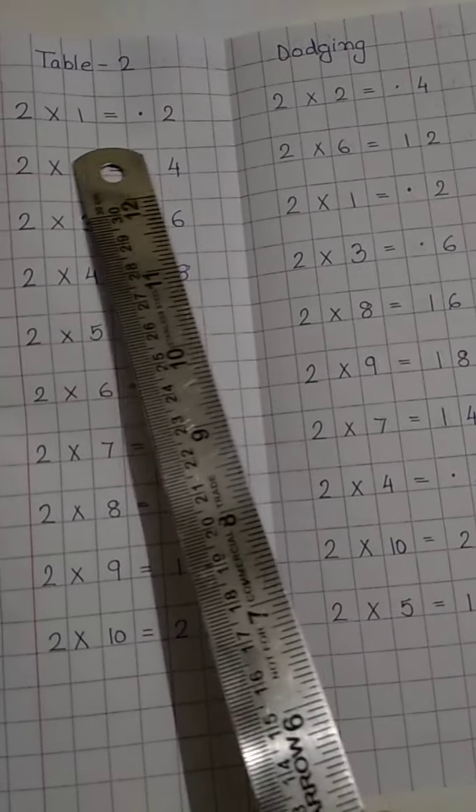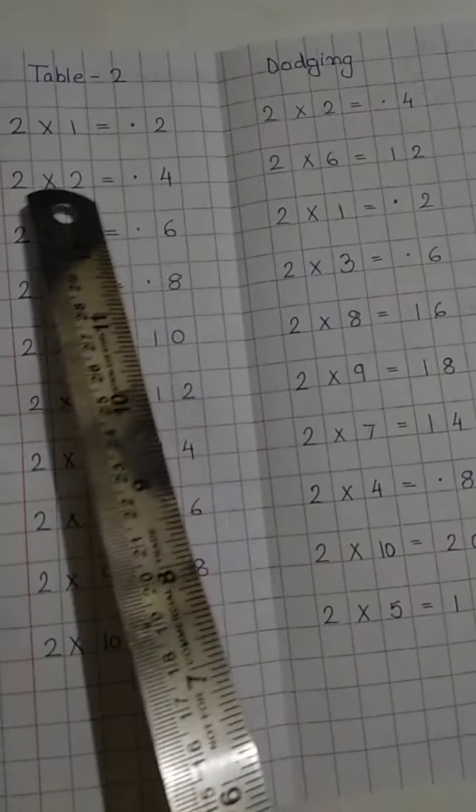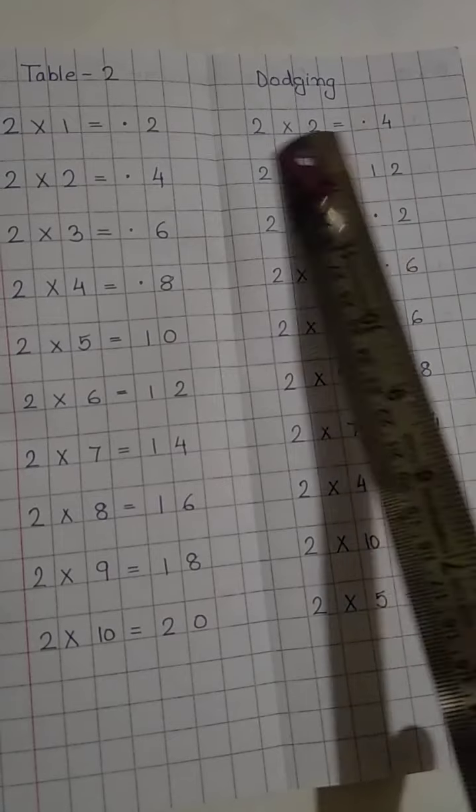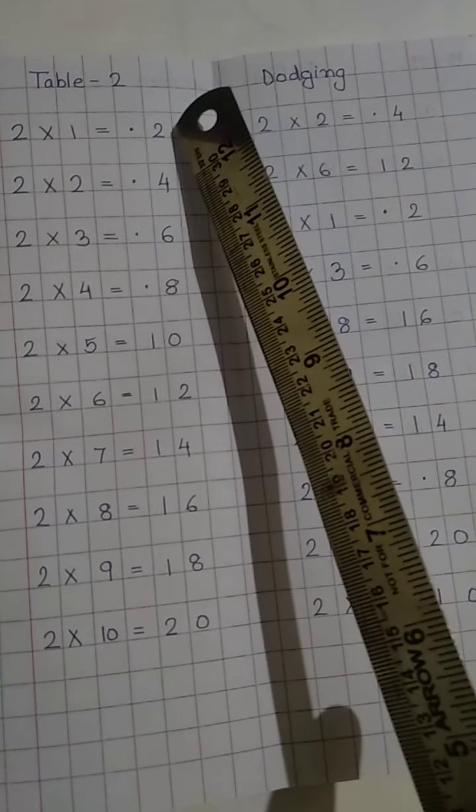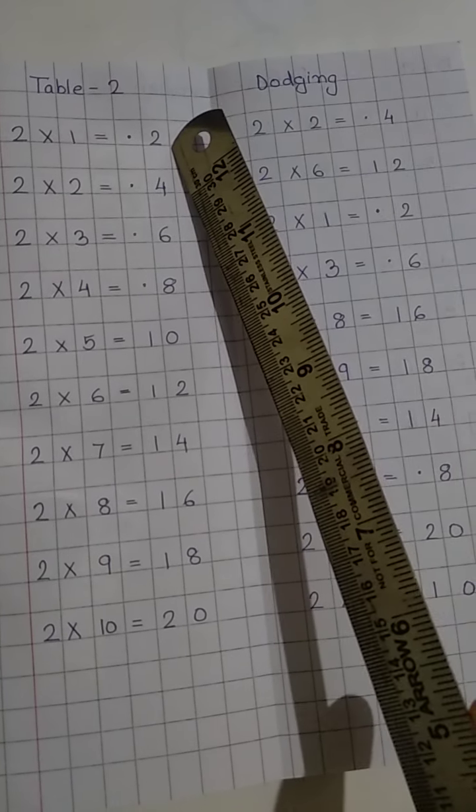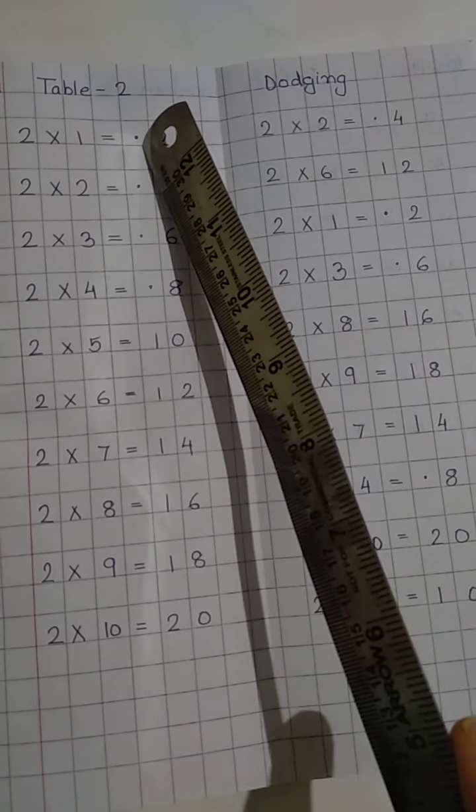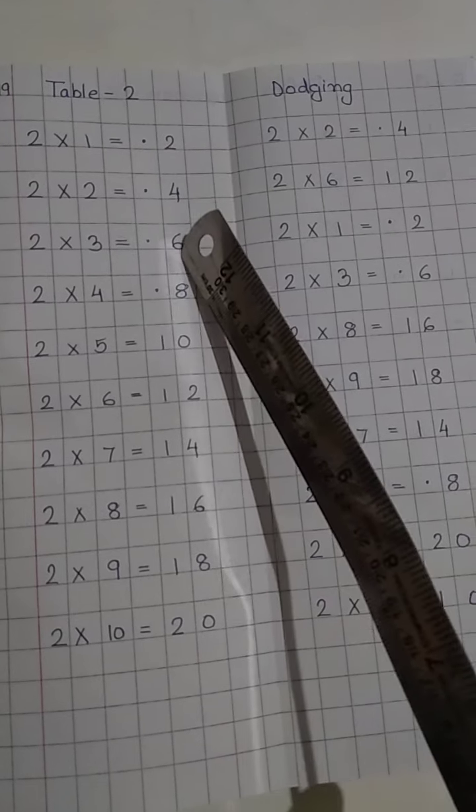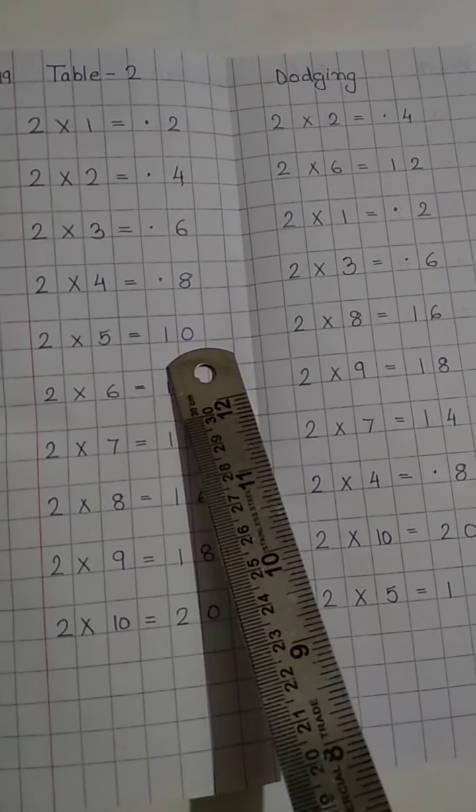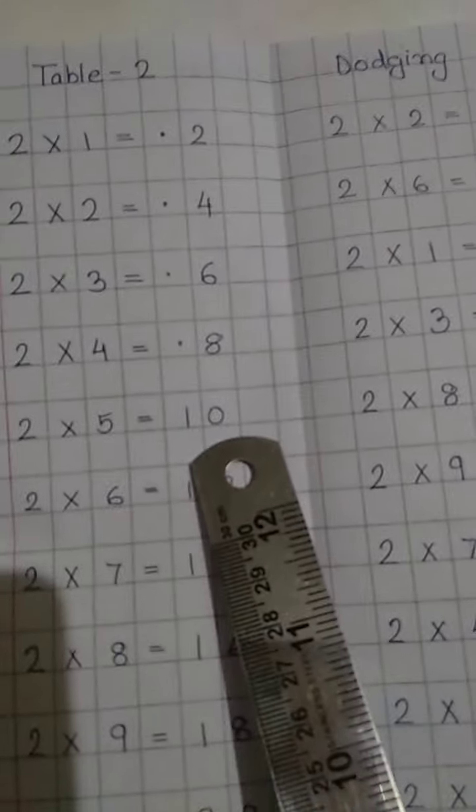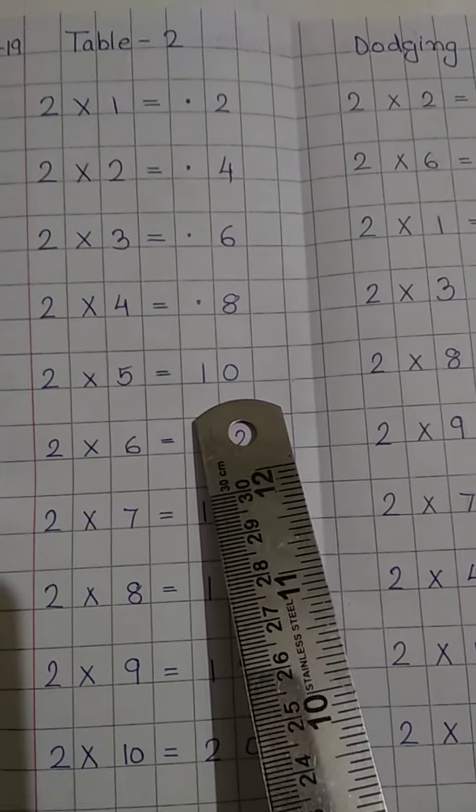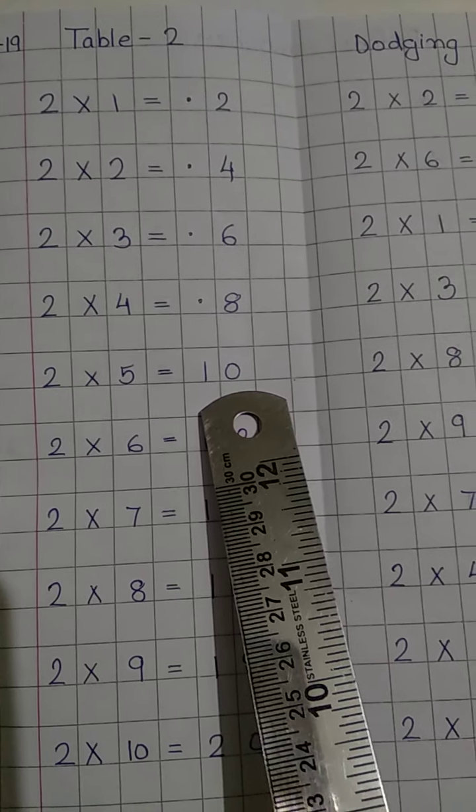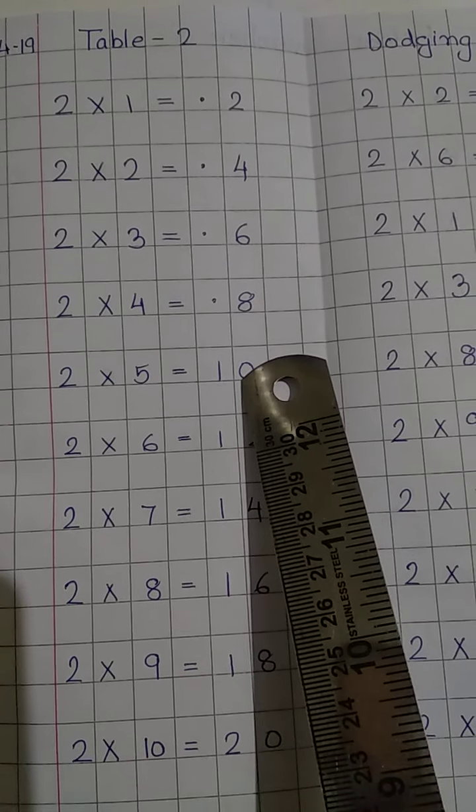Notice here that when we are writing 2 1s are 2, 2 2s are 4, 2 3s are 6, and 2 4s are 8, we are leaving one box and writing the numbers in the next box. We are putting a dot in the first box. Why? Because when you come to 2 5s are 10, you need 2 boxes to write 10. You are going to write 1 and 0 in 2 separate boxes.